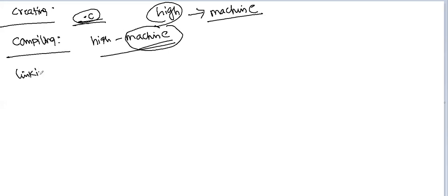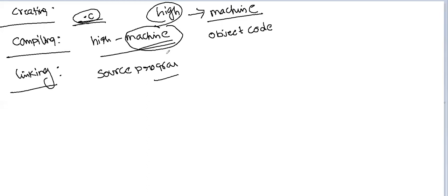Now, linking the program. Whatever program we write is called the source program. After compilation, we get object code, also called machine code. The source program does not contain all the functions — for example, if you want to perform a print operation, you require some predefined functions available in other programs, that is, other header files. If you want to execute a program, the program has to depend on some libraries. Linking means the process of placing other program files and functions together for completion of the program.